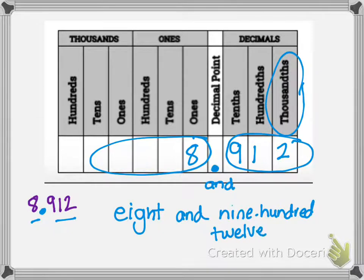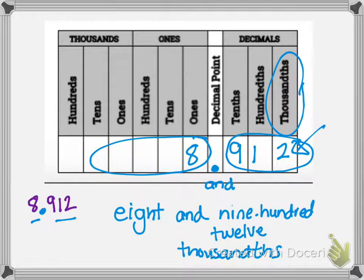You say the place value of the last digit — it's in the thousandths place — thousandths. Now, if this said two hundred eighteen and nine hundred twelve thousandths, then you would say two hundred eighteen and nine hundred twelve thousandths.